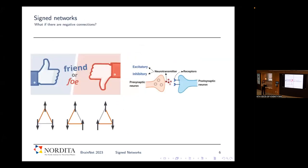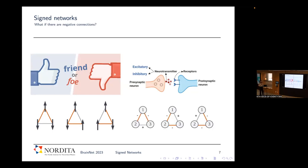Going back to the Tesco problem, there are two different relationships: the complement relationship, which we can consider as a positive relation between nodes, and the substitute relationship, which we model as a negative relationship between products as nodes. This is how we build a signed network. It has more general applications: friend and foe relationships in social networks, excitatory and inhibitory functions in biological systems, and ferromagnetic and anti-ferromagnetic coupling in spin systems. All can be modeled as signed networks where one type of relationship is a positive connection and the competing type is a negative connection.